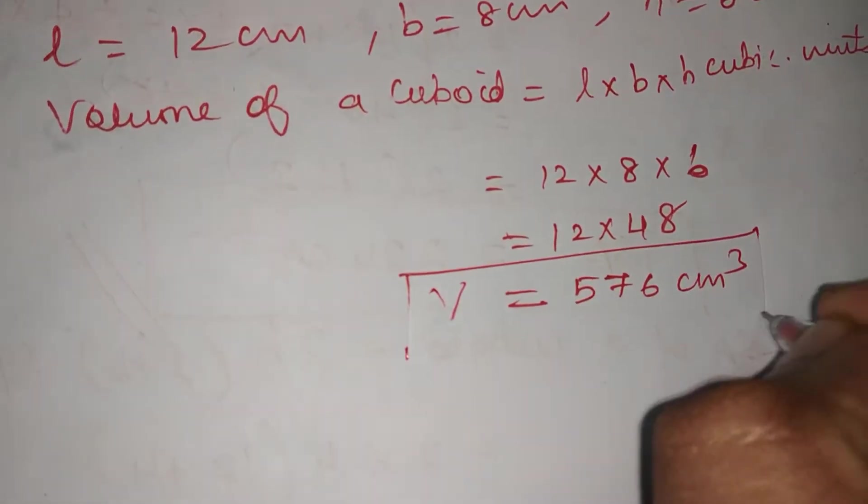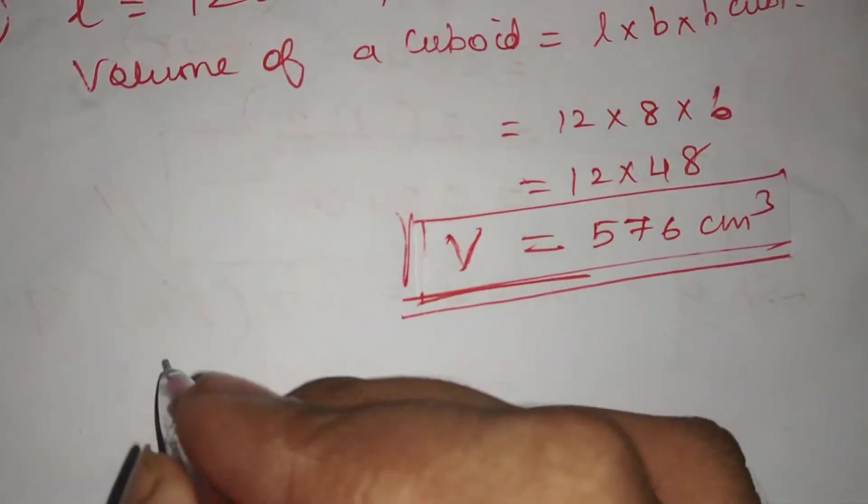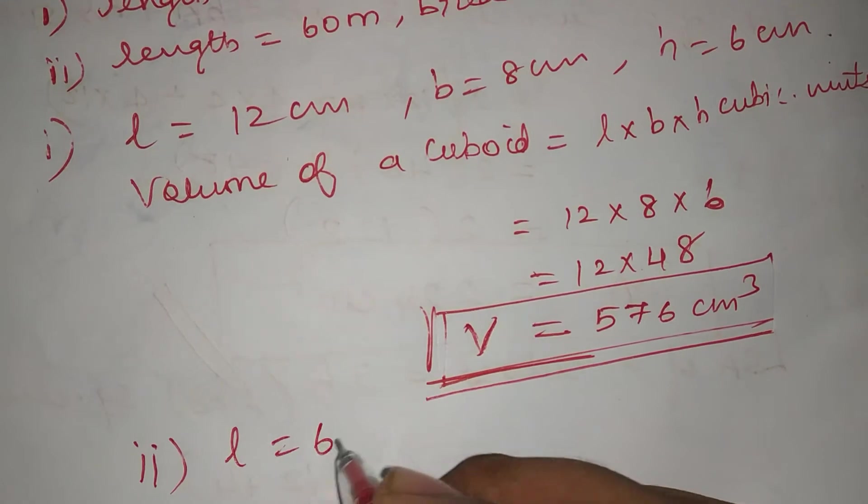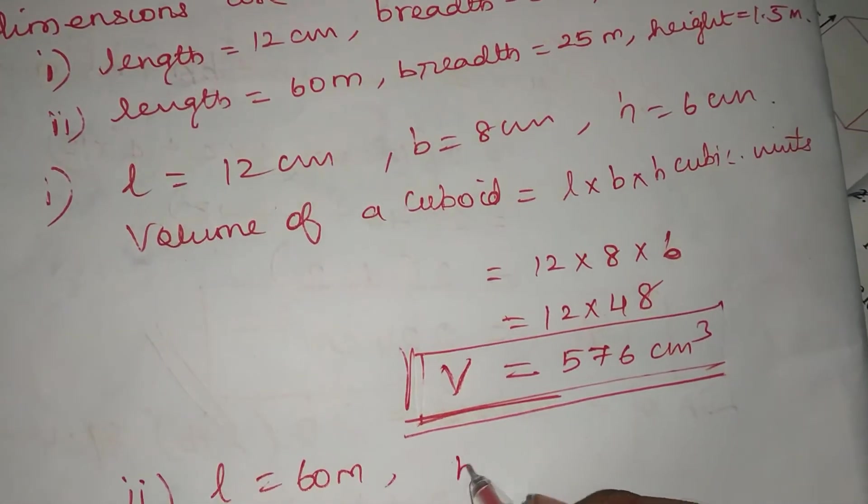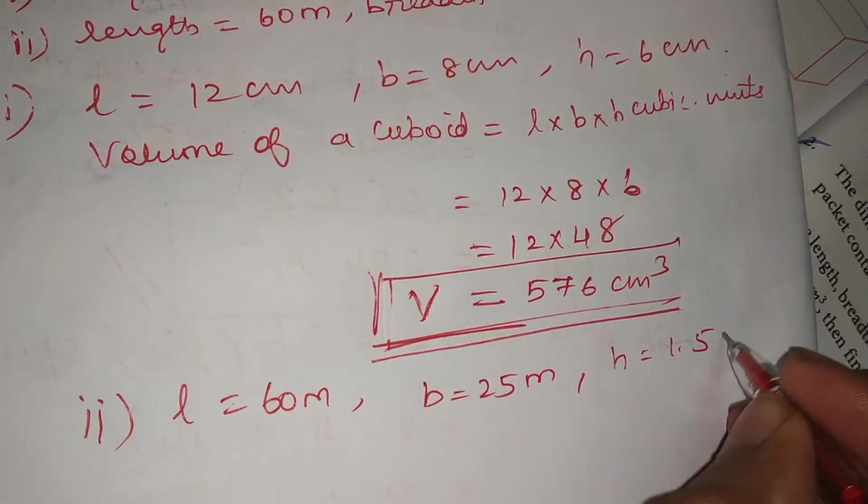Second sum: L equals 60 meter, B equals 25 meter, H equals 1.5 meter.